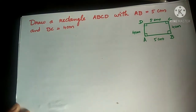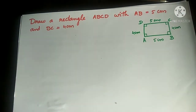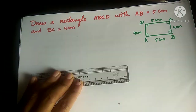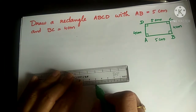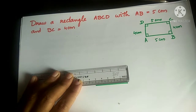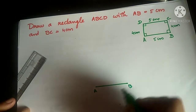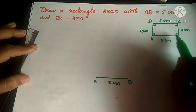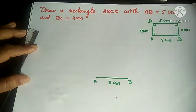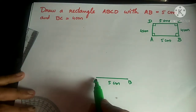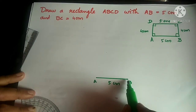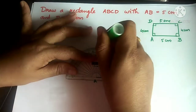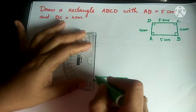Now we can start drawing. To draw this figure, first we will draw the line AB of 5 cm. Using the scale, we draw a line of 5 cm and mark it as AB. Next, we will mark the 90 degree angle. Using the protractor, we mark 90 degrees at A as well as at B.